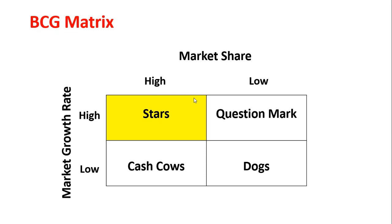Eventually, as the growth rate declines and additional investment is diminished, Stars become Cash Cows. Cash Cows have low market growth rate but high market share. So when a Star's market growth rate declines, it becomes a Cash Cow.